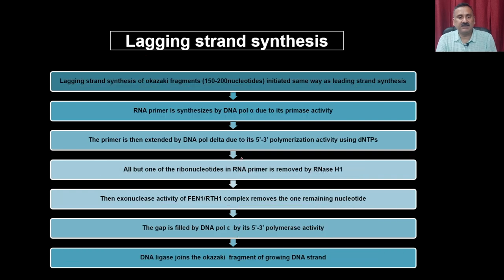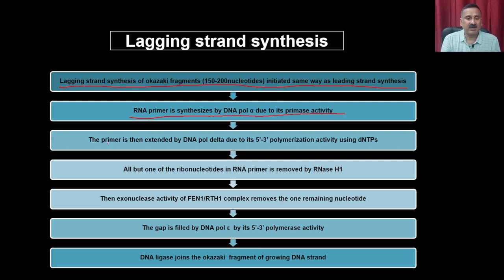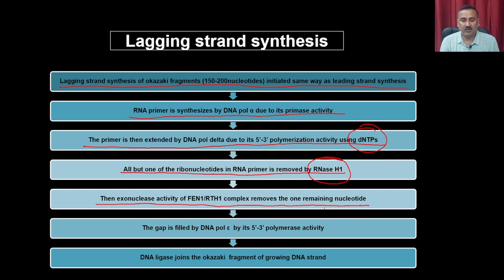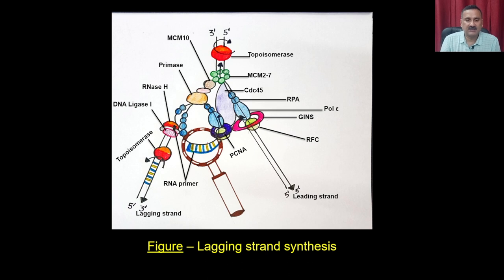In lagging strand synthesis, Okazaki fragments are initiated the same way as leading strand synthesis. An RNA primer is synthesized by DNA Pol alpha via its primase activity, then extended by DNA Pol delta via its 5-prime to 3-prime polymerase activity using dNTPs. All but one ribonucleotide of the RNA primer is removed by RNase H1. The exonuclease activity of the FEN/RTH1 complex removes the remaining nucleotide. The gap is filled by DNA Pol epsilon and DNA ligase joins the Okazaki fragments of the growing DNA strand.